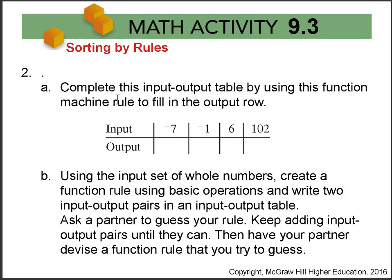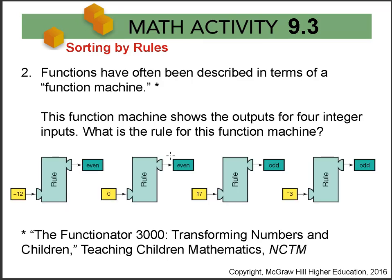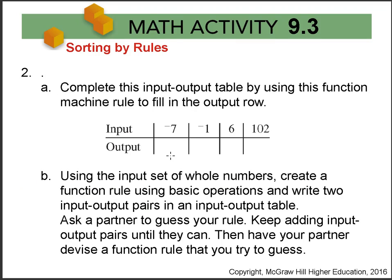In part A, we want you to complete this input-output table by using the rule that we have. So minus seven, what's the output? And remember here, our outputs were either even or odd. So you would want to put that word here and then complete the table.